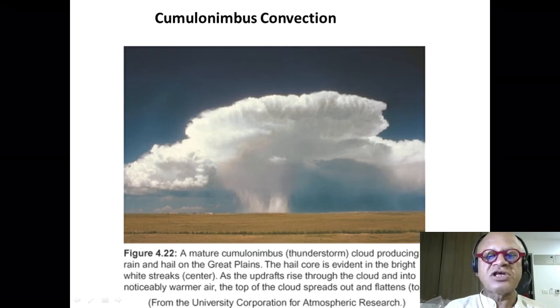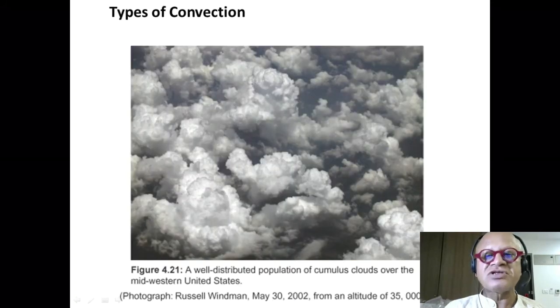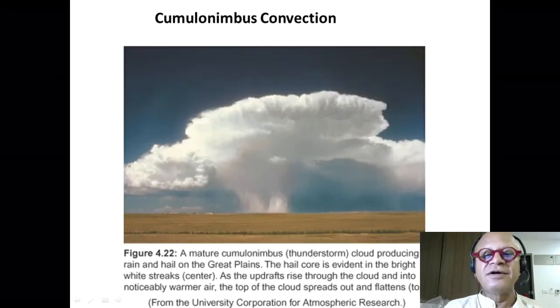Cumulonimbus convection is happening on the Great Plains of the U.S. You can see typical agricultural land in the Great Plains where a lot of corn and wheat and soybean are grown, cotton and other crops.